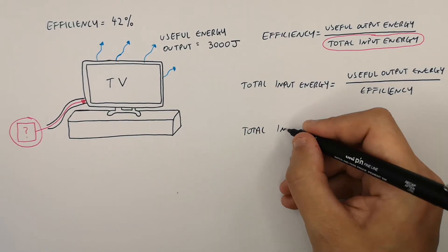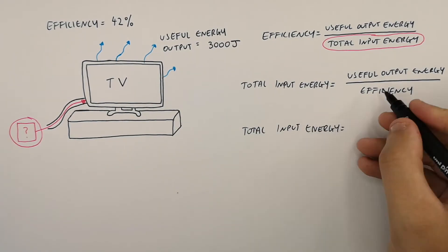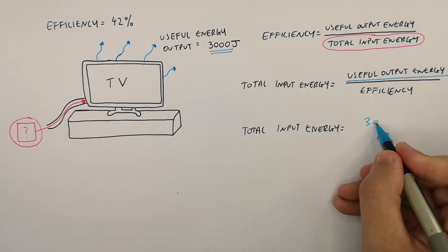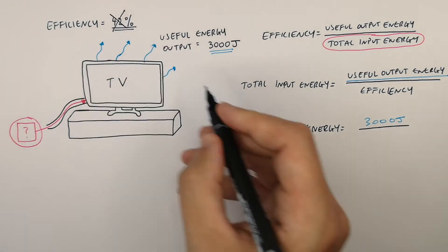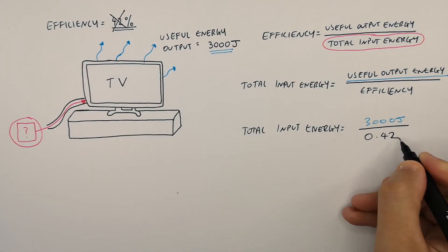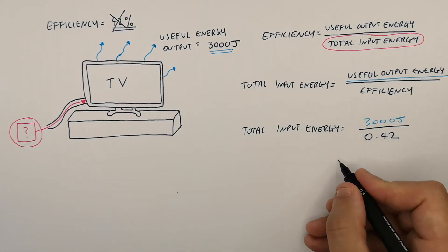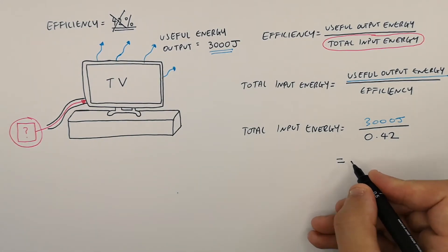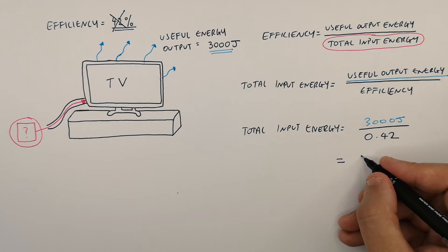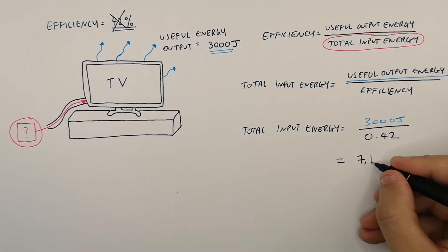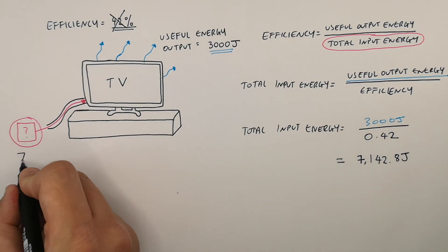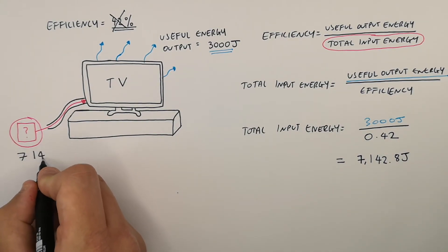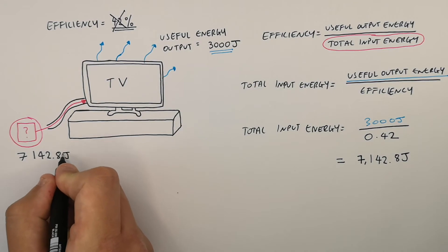So total input energy equals 3,000 joules of the useful output energy divided by not 42%, but 0.42, which is the efficiency. So it's 3,000 joules divided by 0.42, which gives a total input energy for the TV of 7,142.8 joules.